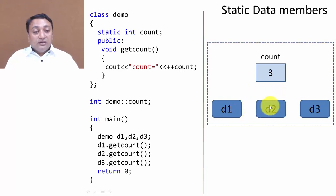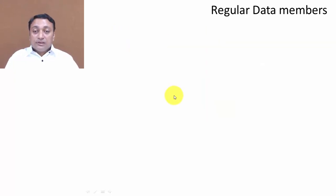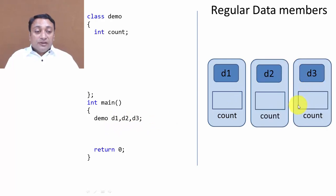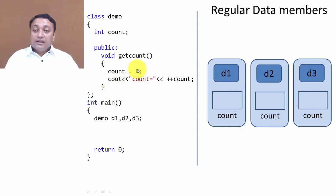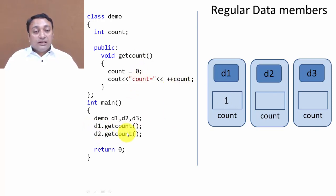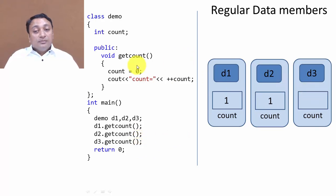For objects d1, d2, and d3 this variable will be common because it is a static variable. Suppose count is a regular variable — if I create three objects, it will allocate a separate member variable count for each object. In get_count we need to initialize count each time, because static variables initialize automatically to zero but regular variables must be initialized manually. So d1.get_count would initialize to zero then increment to one, d2 would again initialize to zero then increment, and similarly d3.